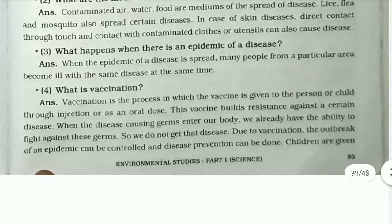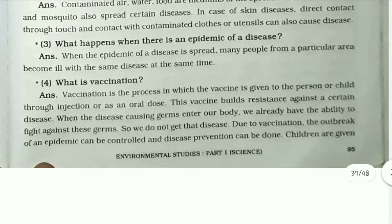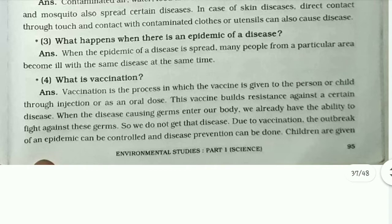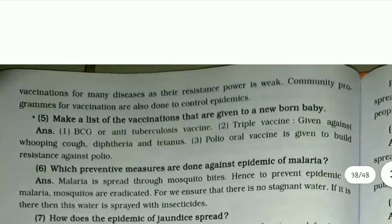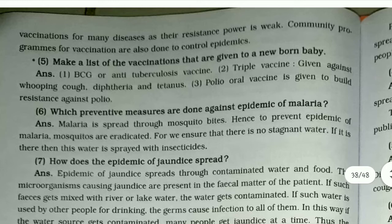What is vaccination? Vaccination is the process in which a vaccine is given to a person through injection or as an oral dose. This vaccine builds resistance against certain diseases so that when disease-causing germs enter our body, we already have the ability to fight them and do not get that disease. Due to vaccination, the outbreak of an epidemic can be controlled. Children are given vaccination for many diseases as their resistance power is weak. Community vaccination programs are also done to control epidemics.